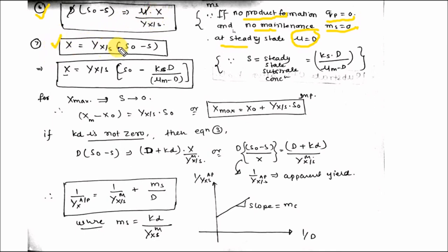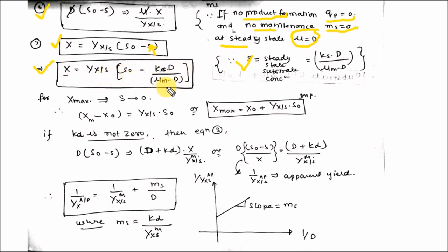From the yield equation, substituting the value of S from Monod kinetics, we obtain: X equals Y_XS times [S_naught minus K_S times D divided by (μ_M minus D)]. For maximum biomass concentration X_max, the final substrate concentration S must tend to zero. Substituting gives the X_max equation for the chemostat.